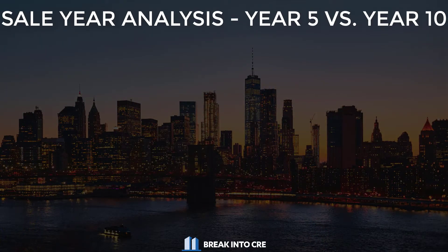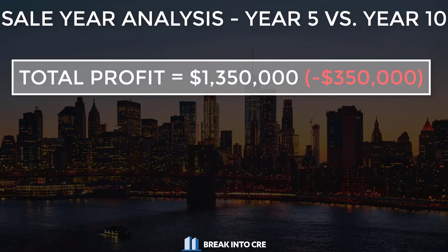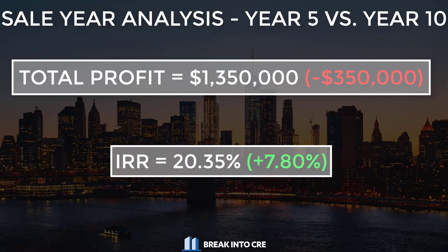Remember, the IRR is a time value of money calculation, meaning cash flows received earlier in your hold period are more valuable than those same cash flows later. So what happens if you sell in year five instead of year 10? Your total profit drops from $1.7 million to $1.35 million — you miss out on $350,000 of net operating income. However, your IRR jumps from 12.55% all the way up to 20.35%, because that $2 million received five years from now is far more valuable than $2 million received ten years from now.